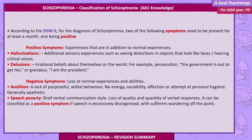Hallucinations are additional sensory experiences such as seeing distortions in objects that look like faces or hearing critical voices. Delusions are irrational beliefs about themselves or the world. For example, persecution — 'The government is out to get me' — or grandeur — 'I am the president.'